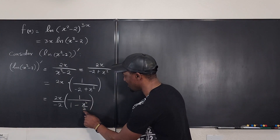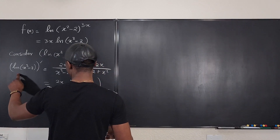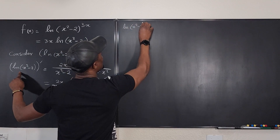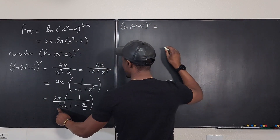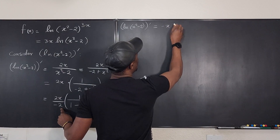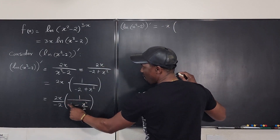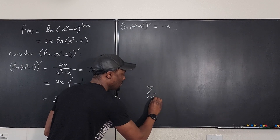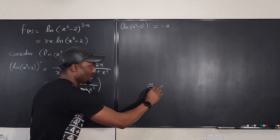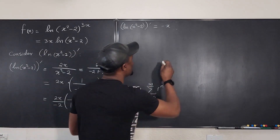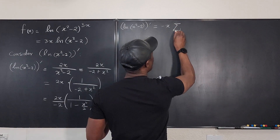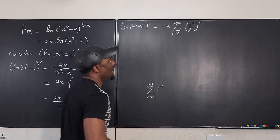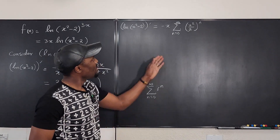So the derivative of ln(x² - 2) equals -x times the sum from n=0 to infinity of r^n, where r = x²/2. This gives us the sum from n=0 to infinity of (x²/2)^n, multiplied by -x out front.